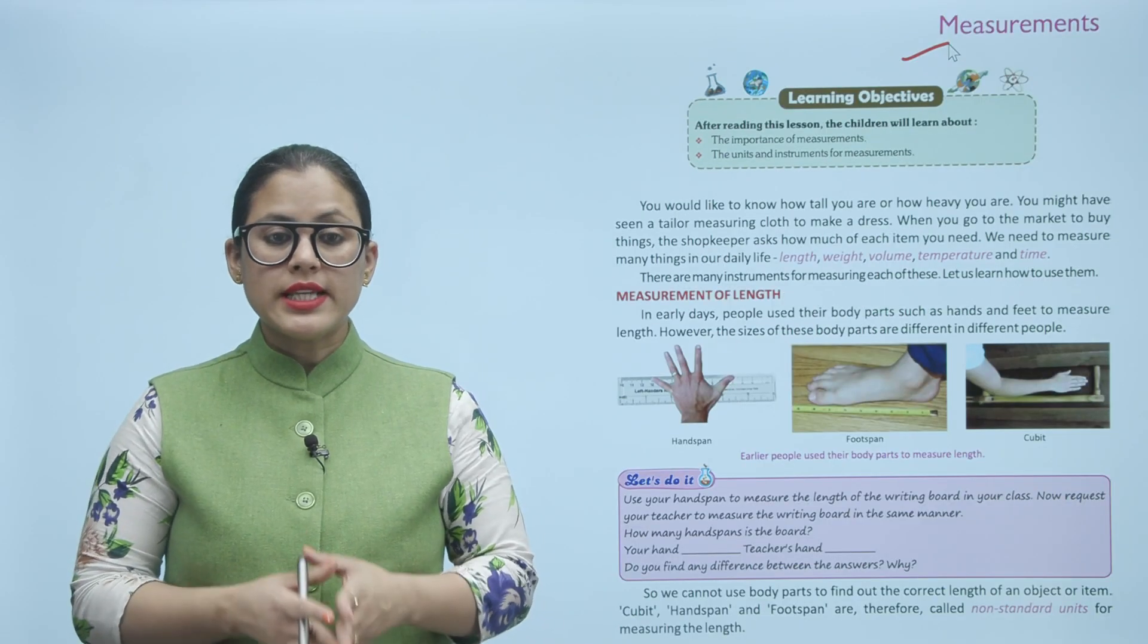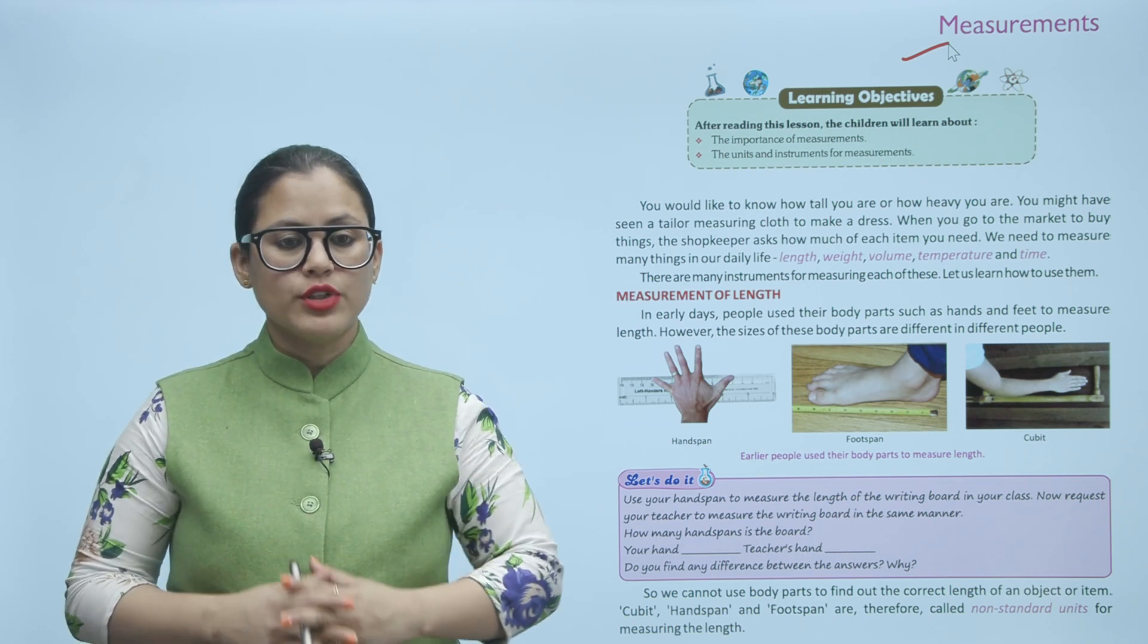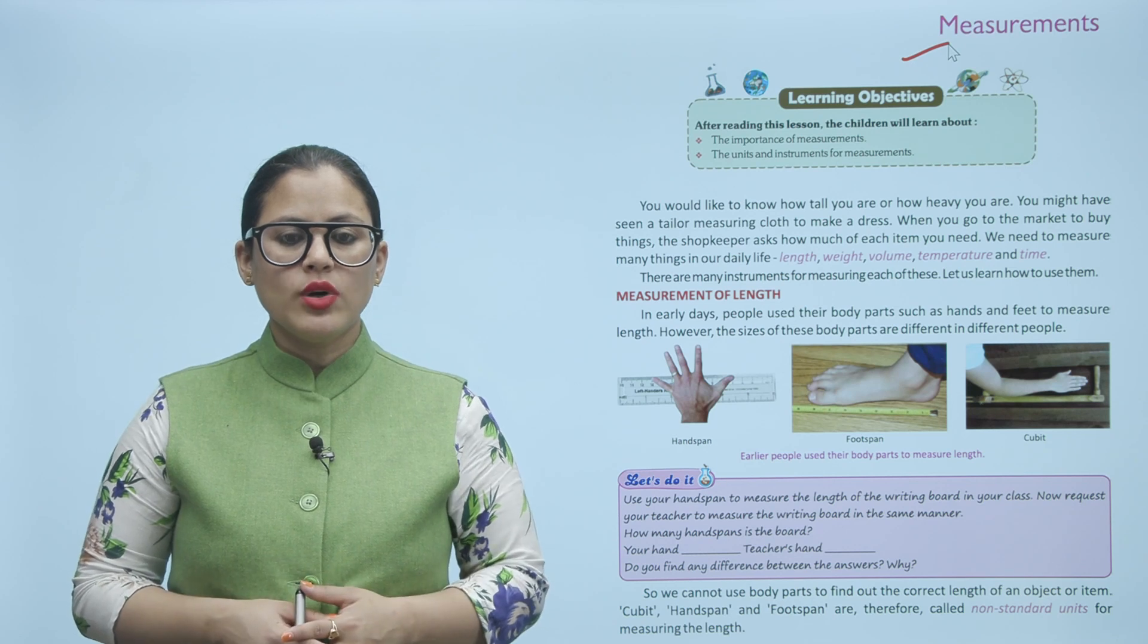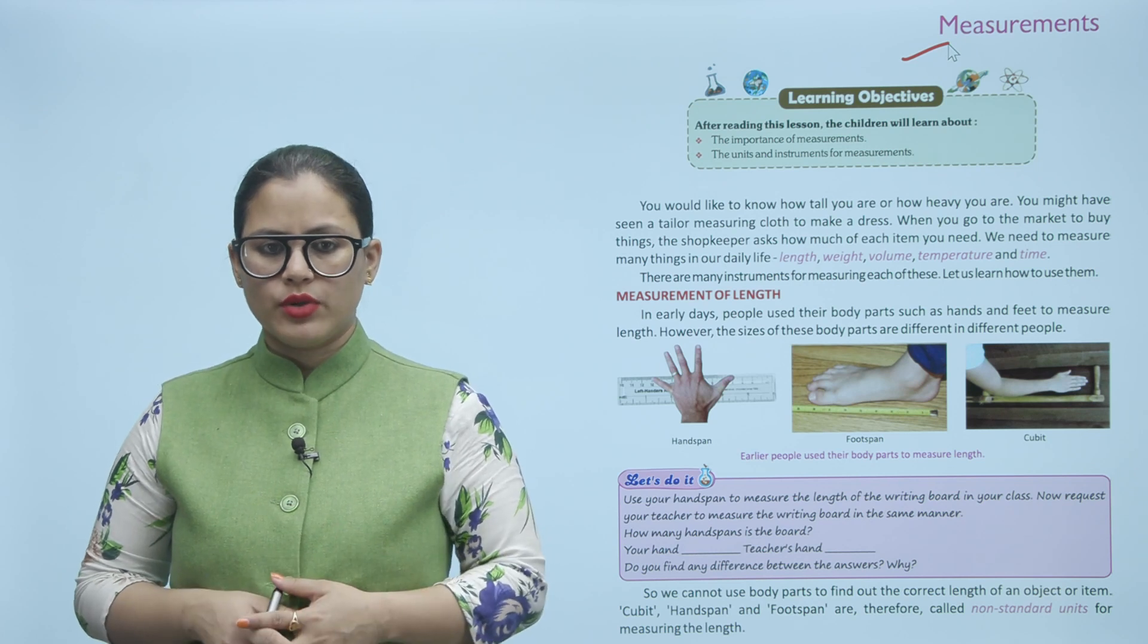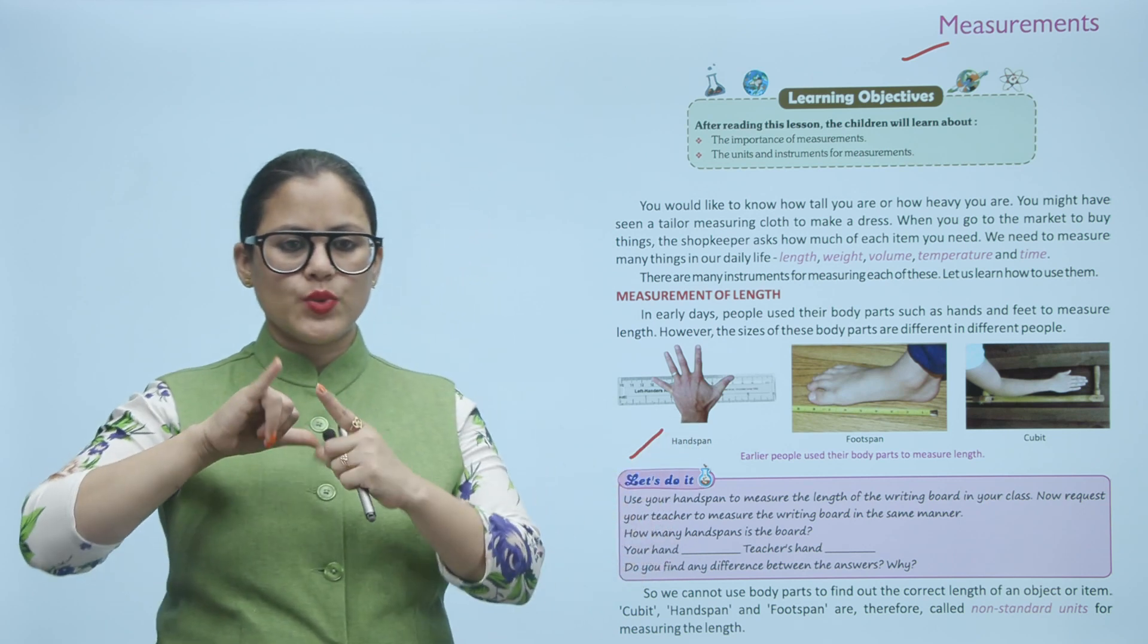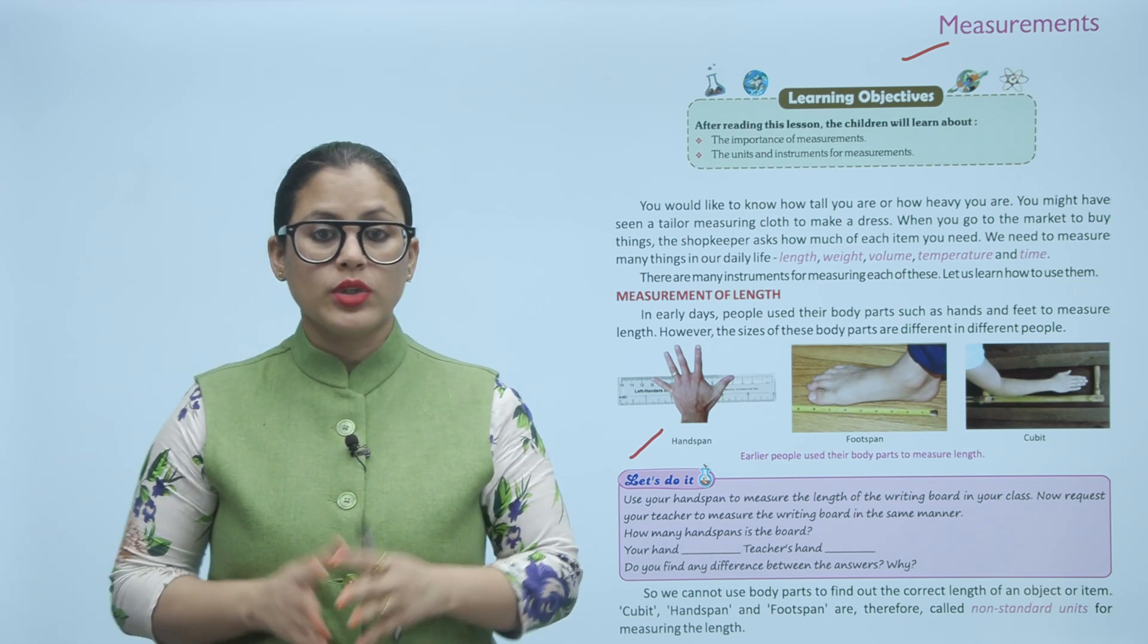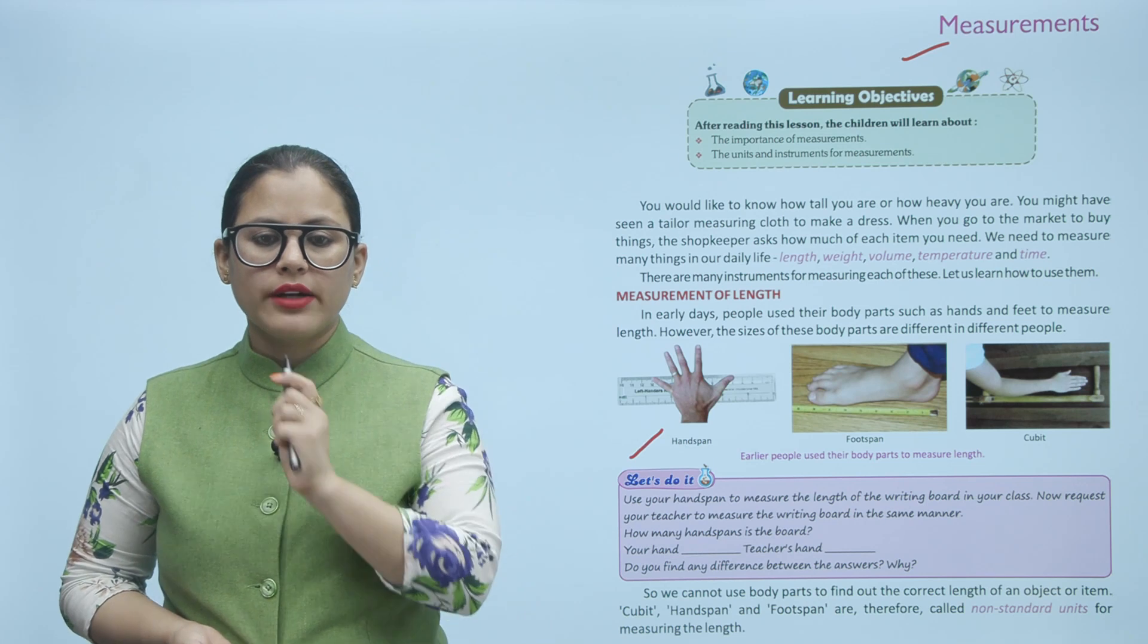Measurement of length. In early days, people used their body parts such as hands and feet to measure length. However, the sizes of these body parts are different in different people. So we cannot use body parts to find out the correct length of an object or item. Cubit, hand span and foot span are therefore called non-standard units for measuring the length. How do you measure the length with your hands or foot? Like the hand span, this is the hand span. Foot span, cubit, from the elbow. But if you think about the size of different people, it will be different. You don't know the current length of any object. That's why we have to say non-standard units.